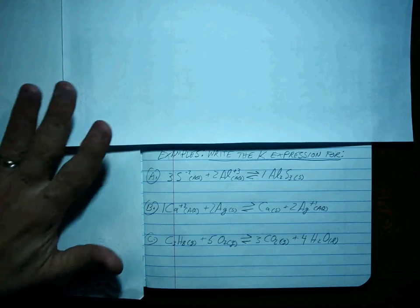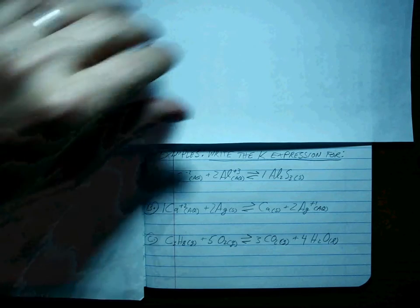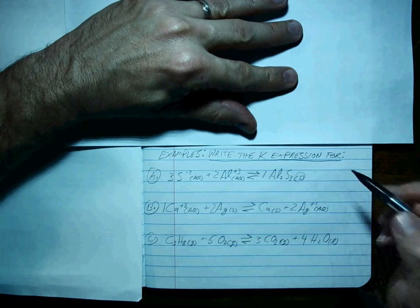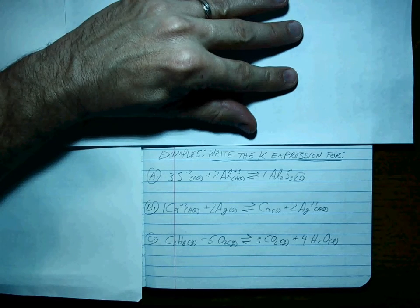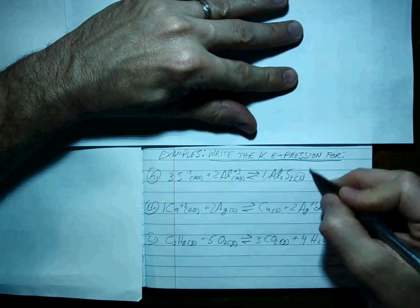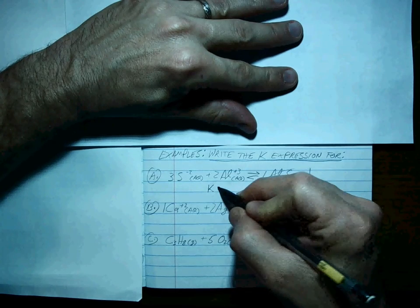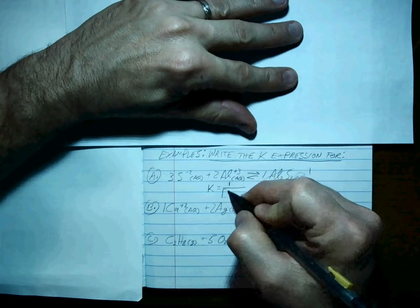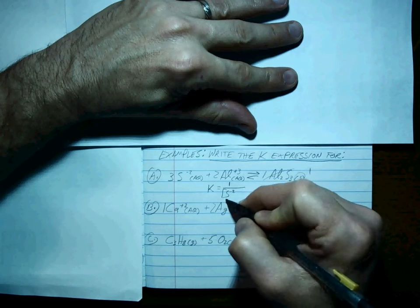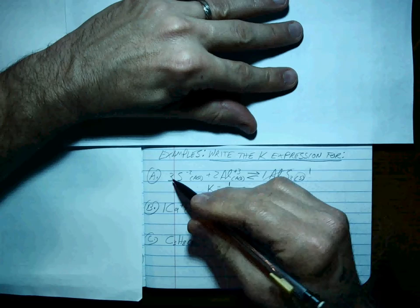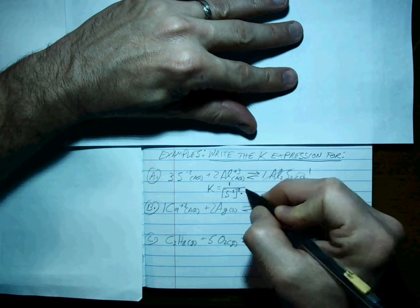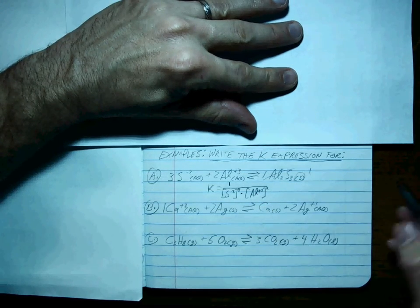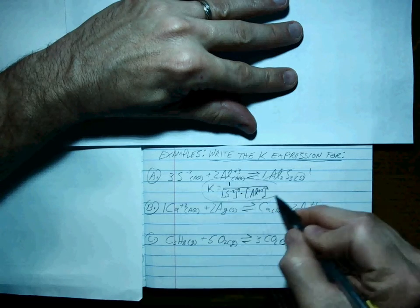All right, you're back. So, what do you think? Well, it's always products over reactants, right? Always products over reactants. But this product is a solid. So what do we do if the product is a solid? We call it 1, okay? So K is going to be equal to 1 divided by the sulfur ion concentration taken to the third power times the aluminum ion concentration taken to the second power. And that's the value of K.